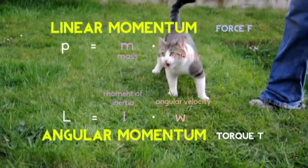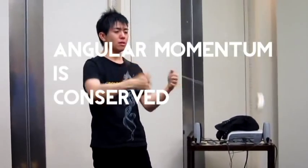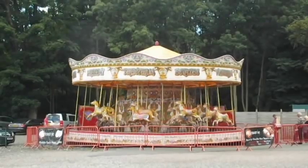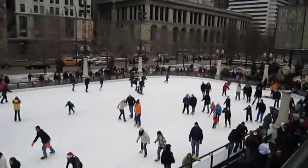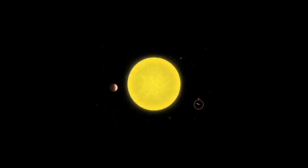Instead of forces, we consider torques. If there are no external torques, angular momentum is conserved. We see the conservation of angular momentum at work every day, explaining everything from a figure skater's spin to a planet's orbit.